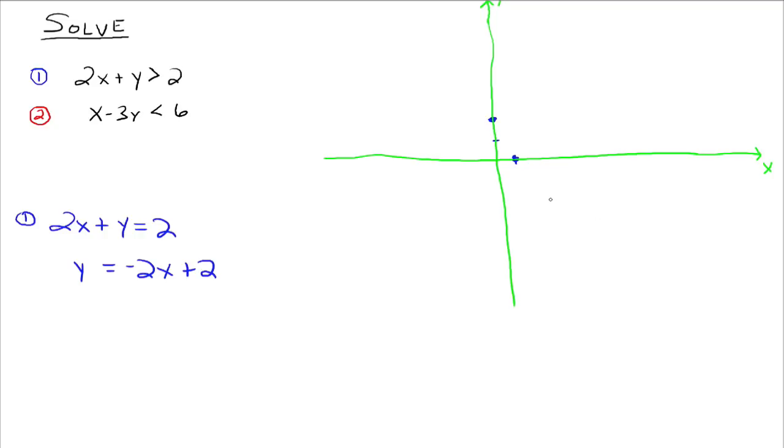And we need to decide is the line supposed to be dashed or solid. Well, remember that all depends on the inequality symbol. Since it's a strictly greater than inequality here, then we have a dashed line, it means the points on the line itself are not included. So we just dash our line.